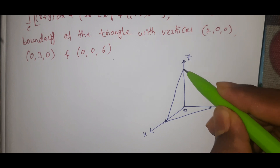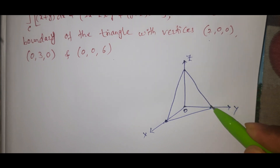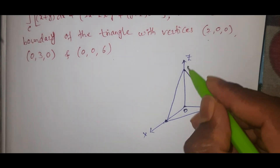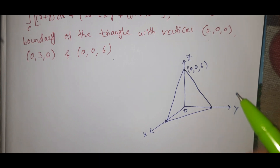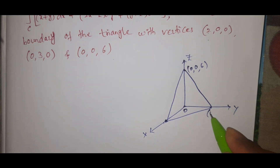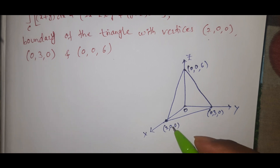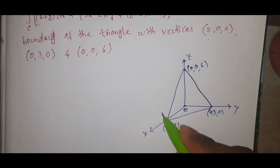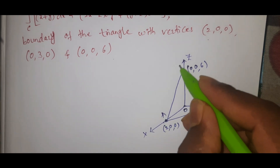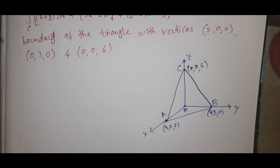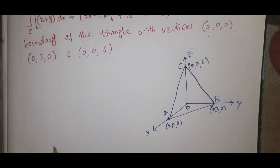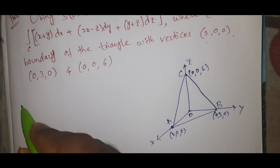Now the points are: A = (0, 0, 6), B = (0, 3, 0), and C = (2, 0, 0). This is point B and this is point C, with the origin here. Now, see the solution.